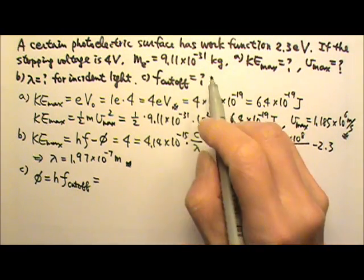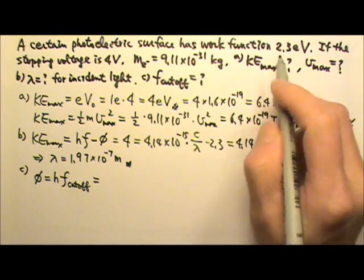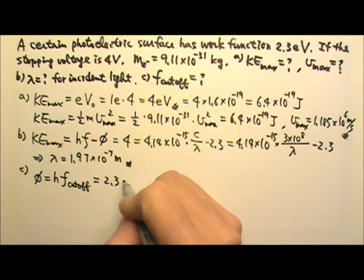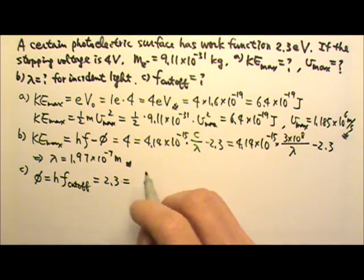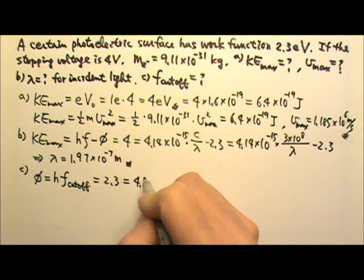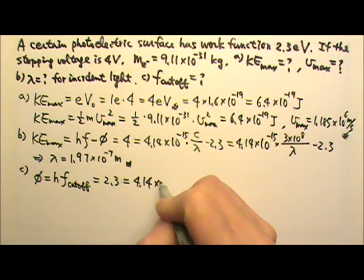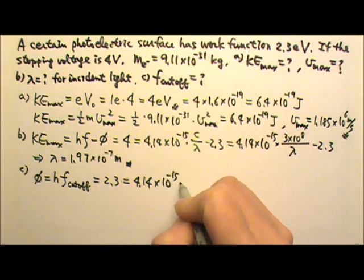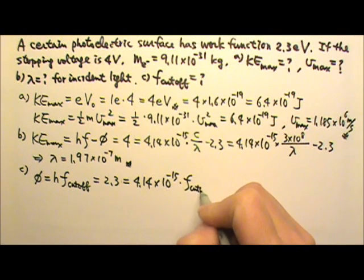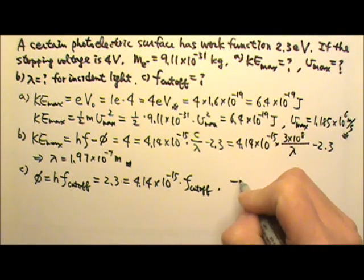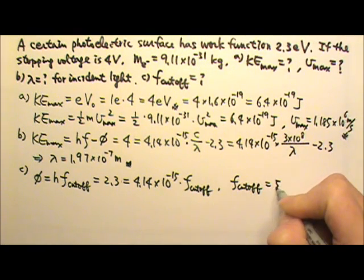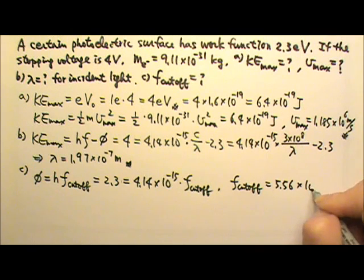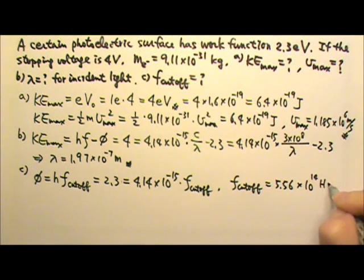So φ = 2.3 eV. Using electron volts means h = 4.14×10⁻¹⁵ eV·s. From here, the cutoff frequency is fcutoff = 5.56×10¹⁴ Hz.